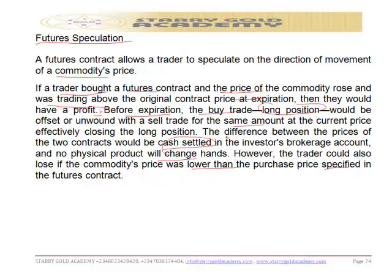However, the trader will also incur a loss if the commodity price was lower than the purchase price specified in the futures contract. Speculators can also take a short position if they predict that the price of the commodity will fall. If the price does decline as expected, the trader takes an offsetting position to close the contract. The net difference is settled at expiration — the investor realizes a gain if the underlying asset price was below the contract price, and a loss if the current price was above the contract price.